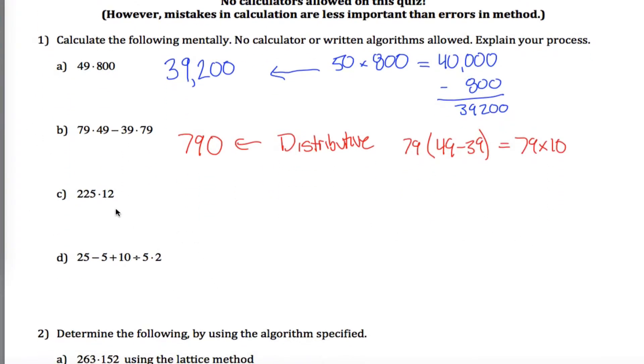Now, what about this one here, 225 times 12? A few different ways you can do that. The easiest, I think, is this double it, half it idea. If you double this number, you get 450, and if you half this, you get 6. And maybe 450 times 6 is easier to do. Still hard? Okay, double it again. 450 doubled is 900. 6 cut in half is 3. 900 times 3? Sure, I can do that. That's 2700. And so what I would do here is say this 225 times 12 is the same as 450 times 6, which is the same as 900 times 3. It's the double it, half it idea that we learned in class.